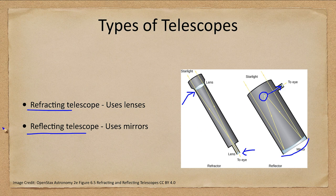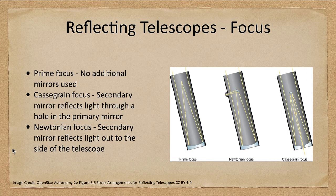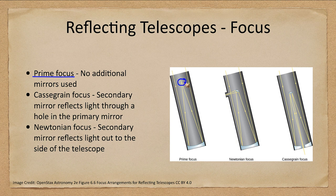There are several different ways you can configure a reflecting telescope. There is the prime focus, where you need nothing else — it brings light to a focus right inside the telescope where you can put your detector. This works as long as you have a big enough telescope. If you're looking at a small telescope, trying to put a detector there could block a big part of the light coming in and make it rather inefficient. However, with telescopes many meters across, a small detector up there is not going to take up a significant amount of space.